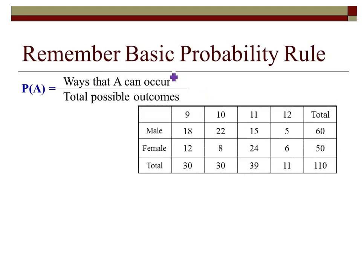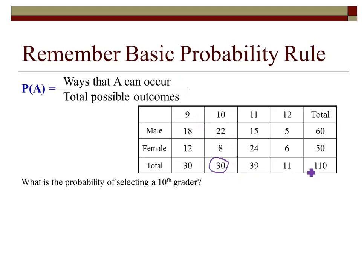Here we have a situation where we have a mixture of students. If I want to find the probability of selecting a 10th grader, all I've got to do is count how many 10th graders we have. We have 22 plus 8 for a total of 30 out of 110. You could leave it as 30 over 110 or reduce it to 3 elevenths. If you choose a decimal answer, carry it out to 3 decimal places, but fractions are a little more accurate.